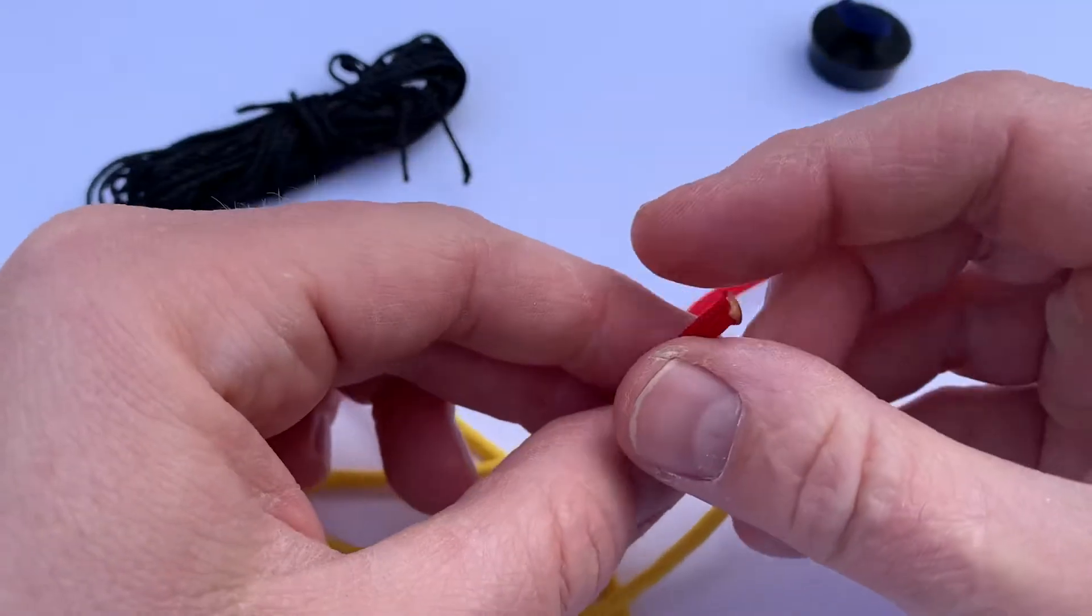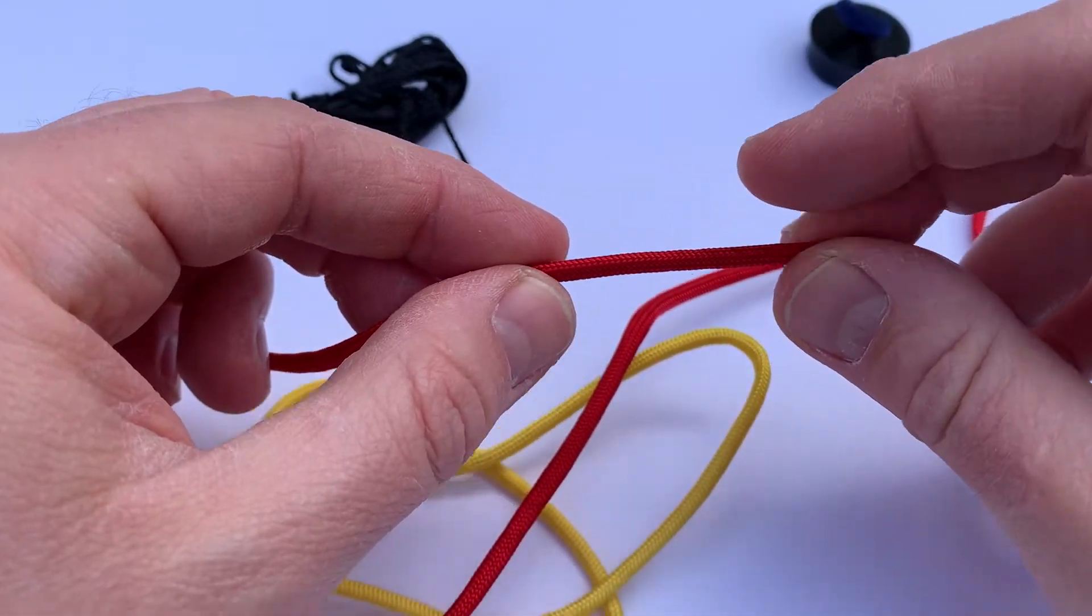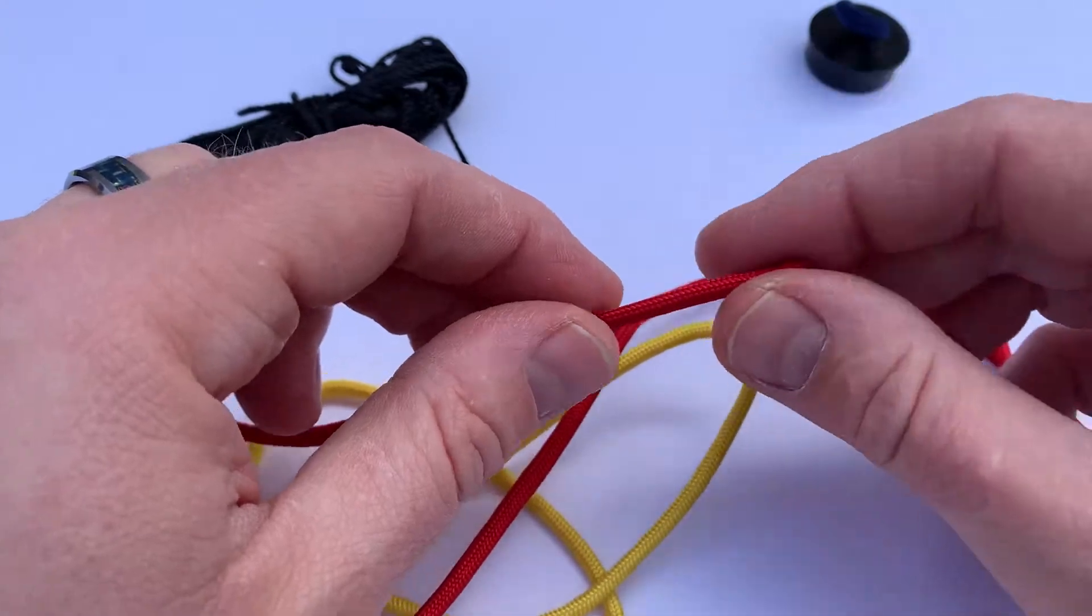You can use the inner strands - there's seven strands inside of here - that you can use with that canvas needle to sew things up.